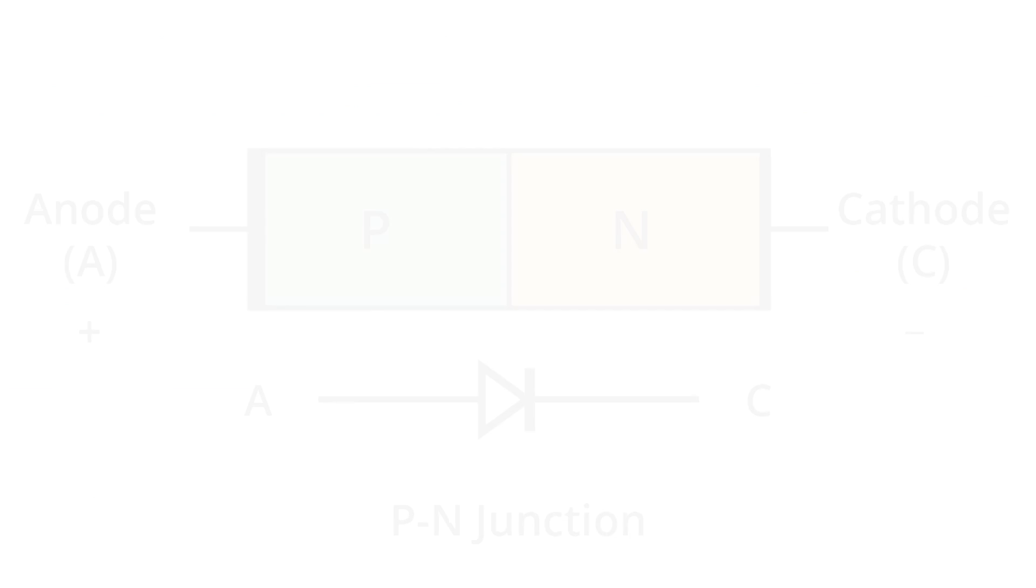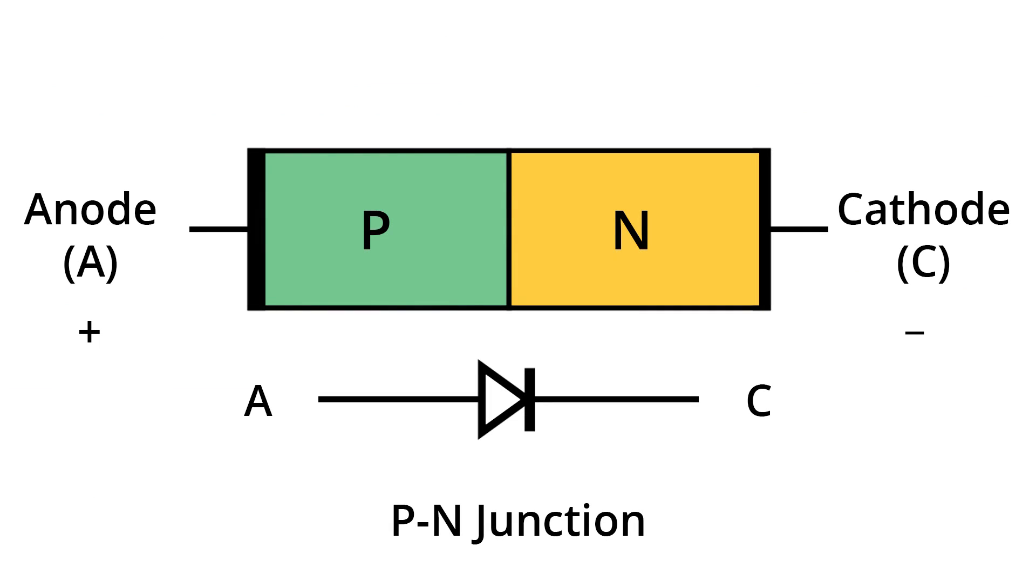A P-N junction is a boundary or interface between two types of semiconductor material, the P-type and the N-type inside a single crystal of semiconductor.